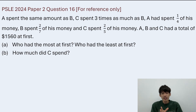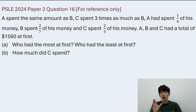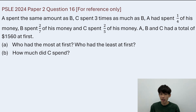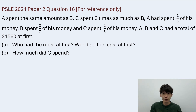So A spent the same amount as B, and C spent 3 times as much as B. A had spent 1 over 4 of his money, B spent 2 over 7 of his money, and C spent 2 over 5 of his money. In the end, A, B, and C had a total of $1,560 at first.